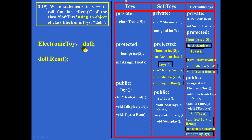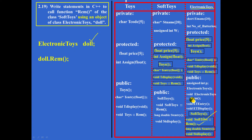Doll is an object of the class electronic toys, so using an object means the answer should be selected from the public area of the class. In the public area of class electronic toys, two remarks functions are present: one remarks of class soft toys and one remarks of class electronic toys. So if I call remarks using doll, remarks of class electronic toys will be called by default, because doll is an object of class electronic toys.